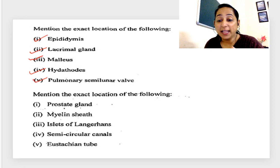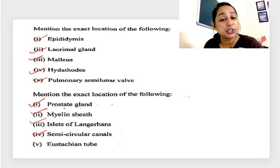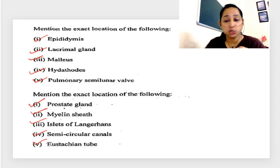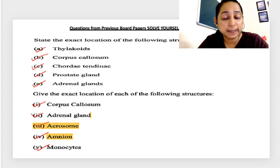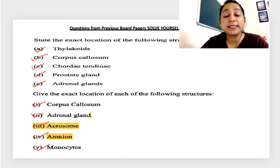Pulmonary semilunar valve we have done, incus we have done, guard cells we have done. State the exact location: tricuspid, amnion, yellow spots, seminal vesicles, adrenal gland again. Then epididymis, lacrimal glands, malleus, hydathodes, pulmonary semilunar valve again.